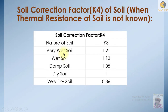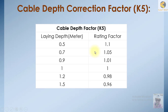Then we have the soil correction factor. If the soil is very good, the correction factor is favorable because the soil will conduct heat properly and the conductor can be used at higher currents. For example, this could be the case near the sea where the soil is very wet. Then we have wet soil, damp soil, dry soil, and very dry soil. As the soil gets drier, the K factor goes down.